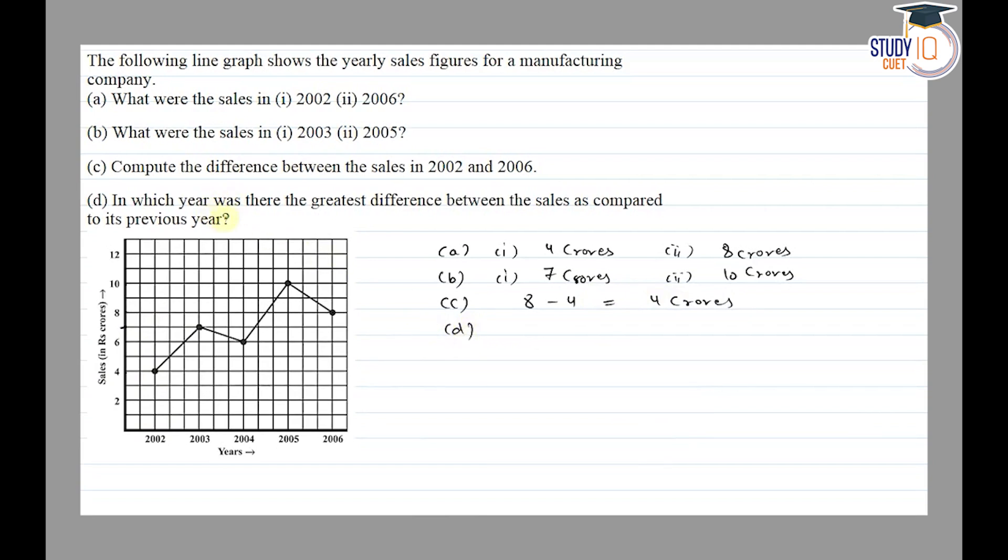Part D is in which year was there the greatest difference between the sales as compared to its previous year. Let's see the differences: 4 to 6 is 2 crores, 6 to 7 is 1 crore, 7 to 6 is 1 crore, 6 to 10 is 4 crores, and 10 to 8 is 2 crores. So 2004 to 2005 had the greatest difference.